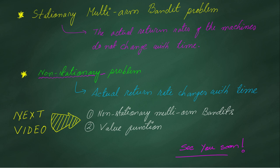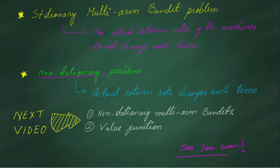These two approaches work for multi-armed bandit problems with stationary return rates — meaning fixed probabilities that don't change over time. If return rates vary with time, these strategies won't work as well. In the next video, we'll cover two strategies for non-stationary problems and introduce the value function in the context of reinforcement learning. Subscribe and click the bell icon for notifications.